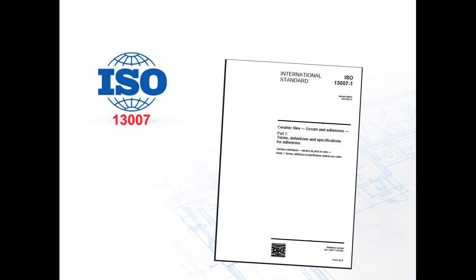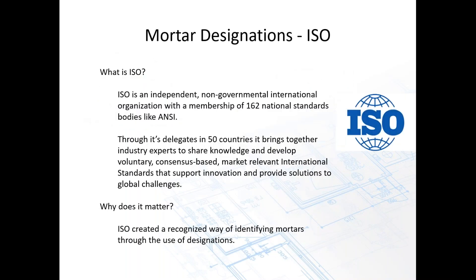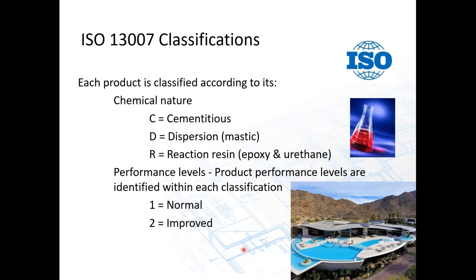Let's talk about ISO, because they're both related. ISO is the international standard used throughout the world. ISO 13007 covers ceramic tile as well as installation materials. It's an independent, non-government international standards organization with membership of 162 national standard bodies like ANSI. It has delegates from 50 different countries, meets a couple times a year, and is still done through a voluntary consensus basis.